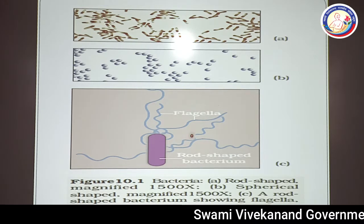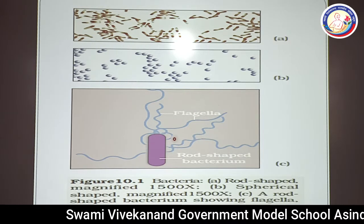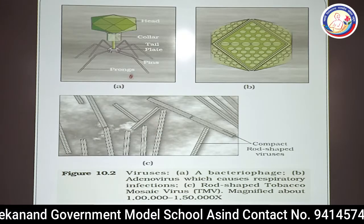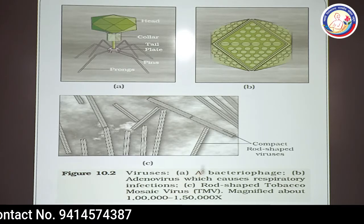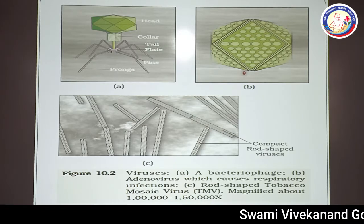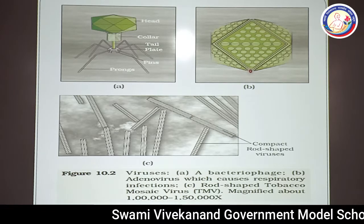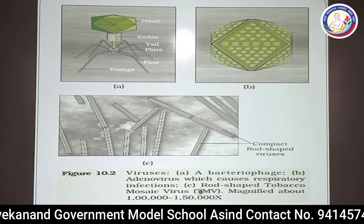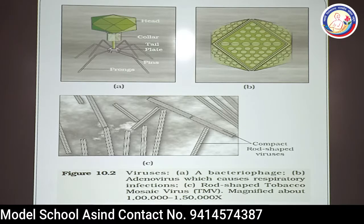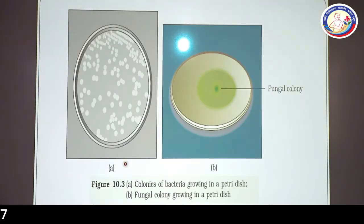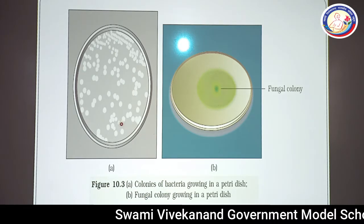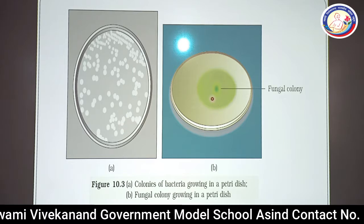This is rod-shaped bacteria with flagella on the surface. In Figure 10.2, (a) is a bacteriophage virus that infects bacteria, (b) is adenovirus that causes respiratory infections, and (c) is the rod-shaped Tobacco Mosaic Virus magnified almost 100,000 to 150,000x under an electron microscope. This figure also shows colonies of bacteria and a fungal colony grown in petri plates on specific culture medium.